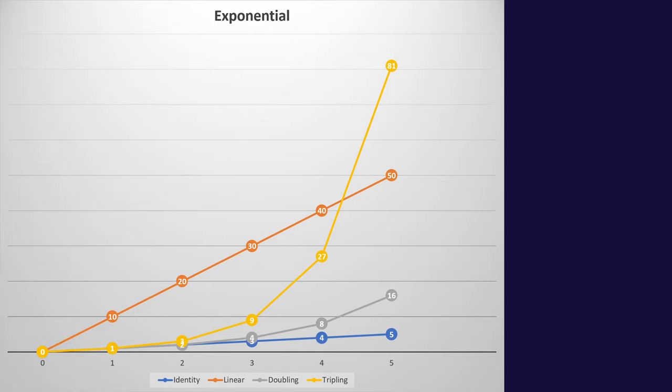At the start of the pandemic, the R-value — the rate of infection — was around 3, meaning one person would infect three others. That's that tripling curve, which is why when there's a spike in cases it follows this huge curve. From one person, within two generations of virus spread you're at nine people infected, and it very quickly ramps up under this sort of relationship.